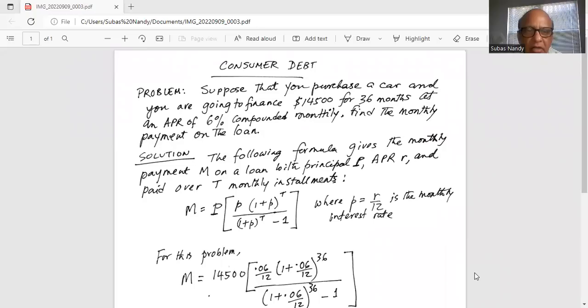Suppose that you purchase a car and you're going to finance $14,500 for 36 months at an APR of 6% compounded monthly. Find the monthly payment on the loan.